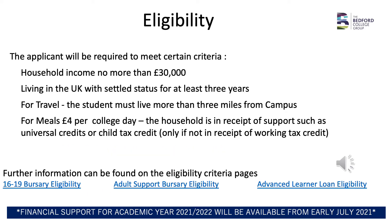Before applying it is important to have a good understanding of the eligibility criteria. The applicant will be required to meet certain criteria including: a household income of no more than £30,000; living in the UK with settled status for at least three years; for travel, the student must live more than three miles from campus; and for meals, which are £4 per day, the household must be in receipt of support such as universal credits or child tax credits, only if not in receipt of working tax credit.